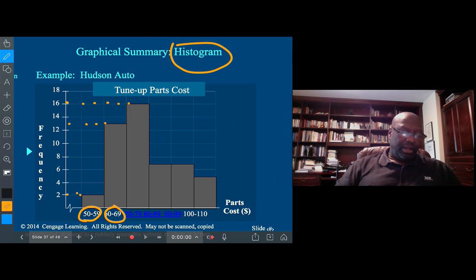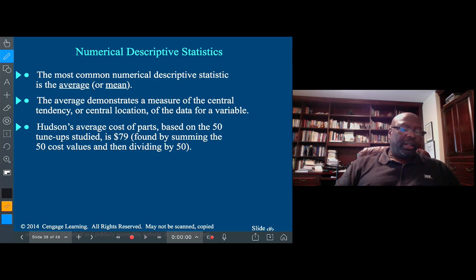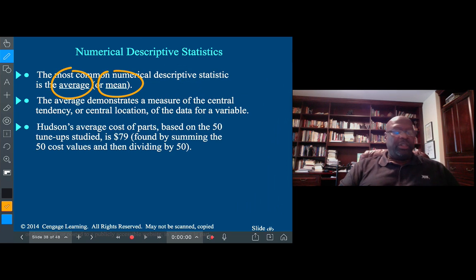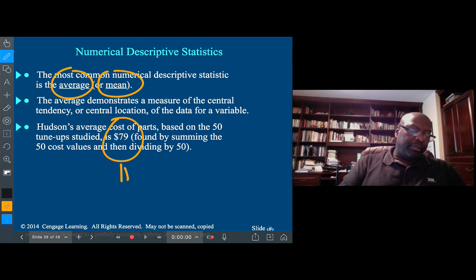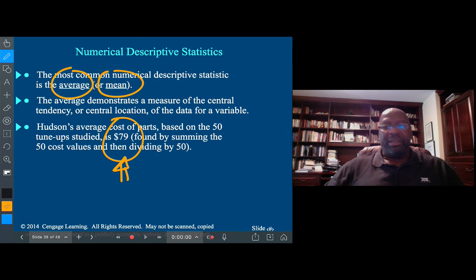Numerical descriptive statistics will give us values like the mean, median, and mode. And usually mean and median are values that are used to give us what we call measures of central tendency, which is where are most of the values in our data set. And so we use that information quite useful. 79 appears to be the average price, or the average cost of parts using any repair, so someone bringing their car in for repair can expect somewhere around $80 in parts.